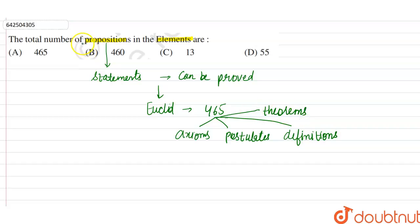So from these options, we can say that the correct option is option A: 465 propositions.